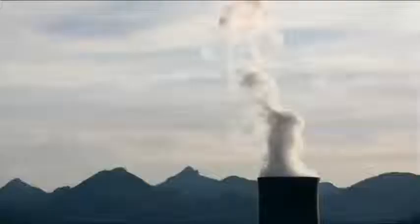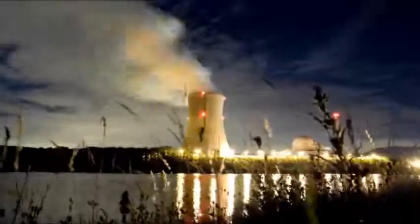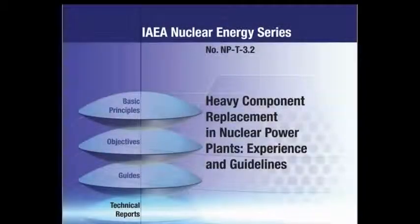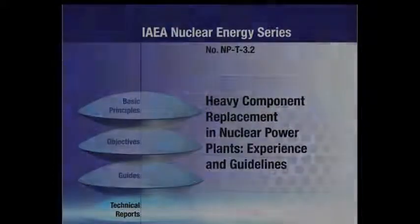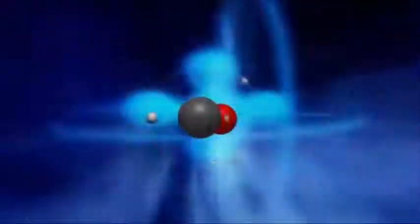We have quite a bit of research from the IAEA outlining the types of radiation embrittlement that happens in nuclear reactors, in the reactor buildings, in any of the 10,000 parts in those reactor buildings. The IAEA's own PDF on the subject states there are two types of embrittlement which affect pressurized water reactor vessel internal components: irradiation embrittlement, which may affect core region internals, and thermal aging embrittlement, which may affect cast stainless steel parts. There is also fatigue corrosion, radiation-induced creep, relaxation, and swelling.